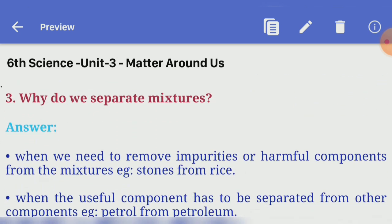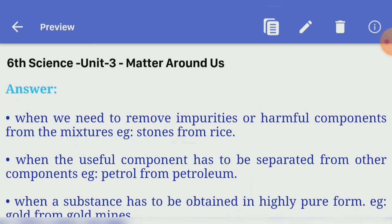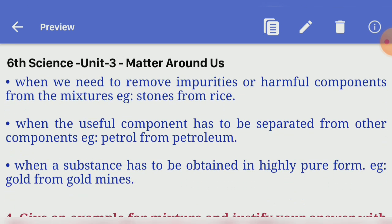Third question: why do we separate mixtures? Answer — when we need to remove impurities or harmful components from the mixture, example stones from rice. Second, when the useful component has to be separated from other components, example petrol from petroleum. Third, when a substance has to be obtained in pure form, example gold from gold mines.